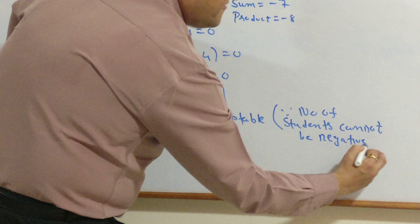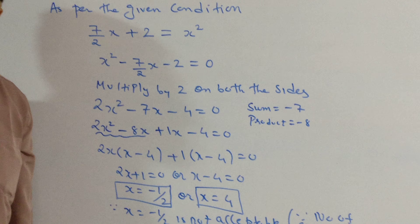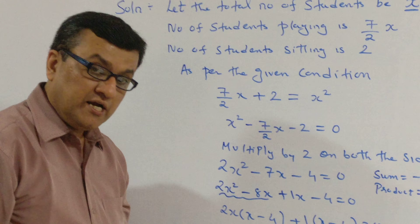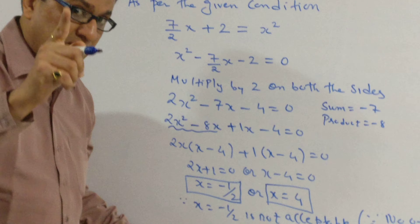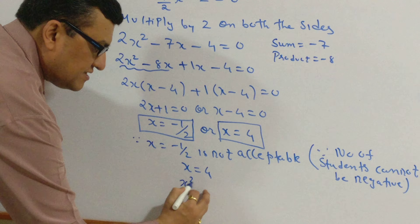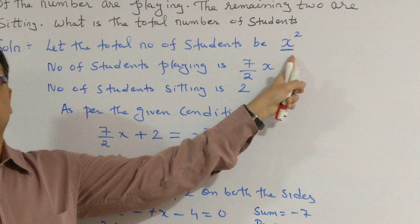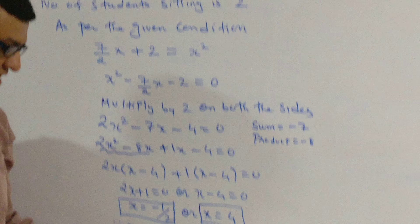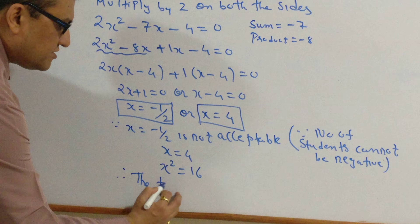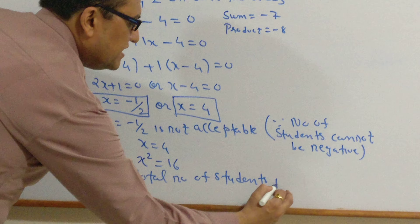So x equals 4. But unlike normal sums where finding x means we are done, here we are not finished. We got x as 4, but the total number of students is x², not x. So x² equals 16. As we stated, the total number of students is x², so our final answer is: therefore, the total number of students is 16.